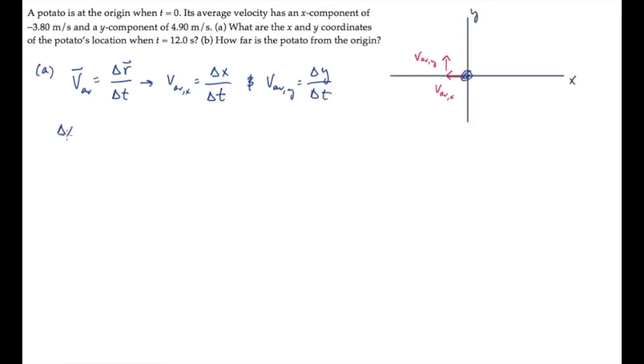These displacements are written here. The change in position, delta x is x minus x0, and delta y is y minus y0, the final positions minus the initial. The potato starts at the origin, so both of the initial coordinates are 0, and the displacements, the change in positions, just equal the final positions.